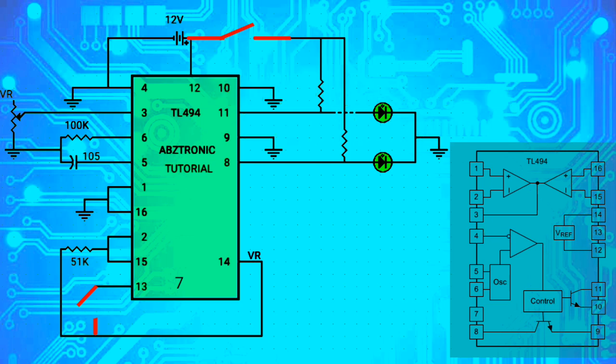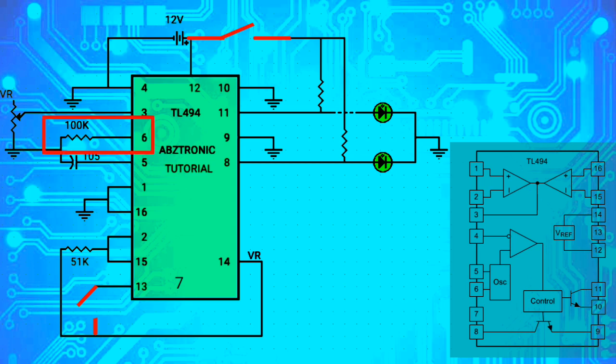Pin 5 is the CT, or the timing capacitor, while pin 6 is the RT, the timing resistor. These two pins set the oscillator frequency of the TL494.